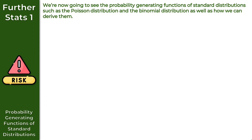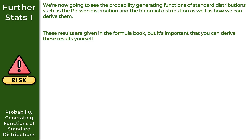In this video, I want to take a look at probability generating functions of standard distributions. We're going to see the PGFs of standard distributions, such as the Poisson distribution and the binomial distribution, as well as how we can derive these results. These results are given in the formula book, so you don't have to memorize them, but it is important that you can derive these results from first principles yourself.